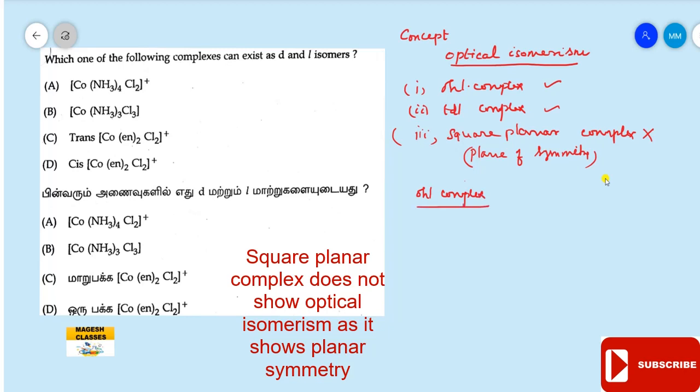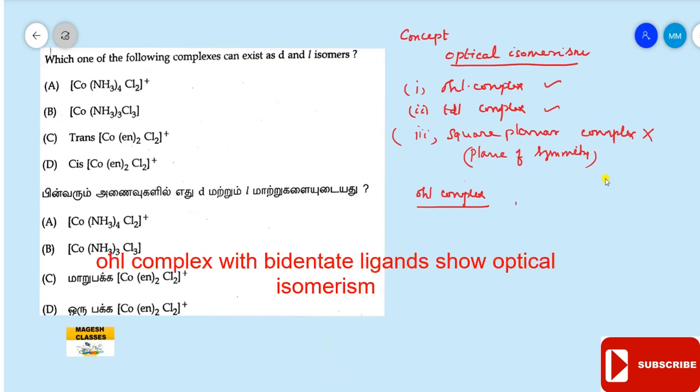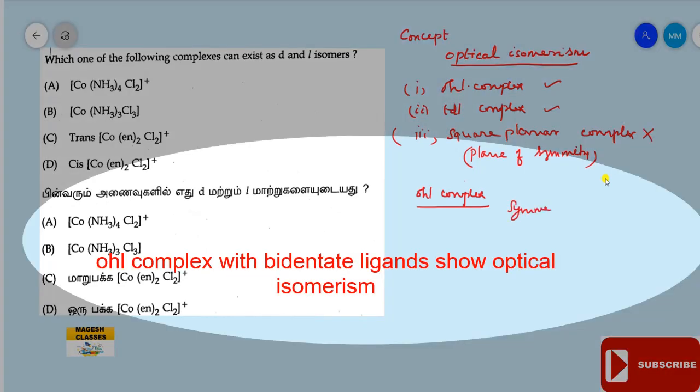Octahedral complex optical isomerism is more common than that of the tetrahedral complex. In octahedral complexes, the complex having symmetrical bidentate ligands shows optical isomerism. For example, EN (ethylenediamine) is a symmetrical bidentate ligand. Bidentate ligands have two donor atoms.